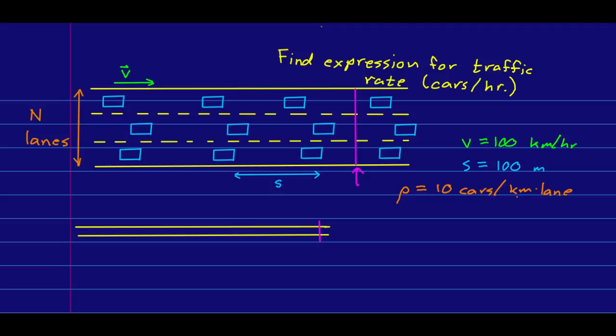And so, note that this kilometers times lane is essentially an area. So, now we can think about how many cars will cross this line. And in particular, we could think about in the next hour how many cars will cross. So, somewhere way down the road is the point where the last cars that will cross in the next hour are.